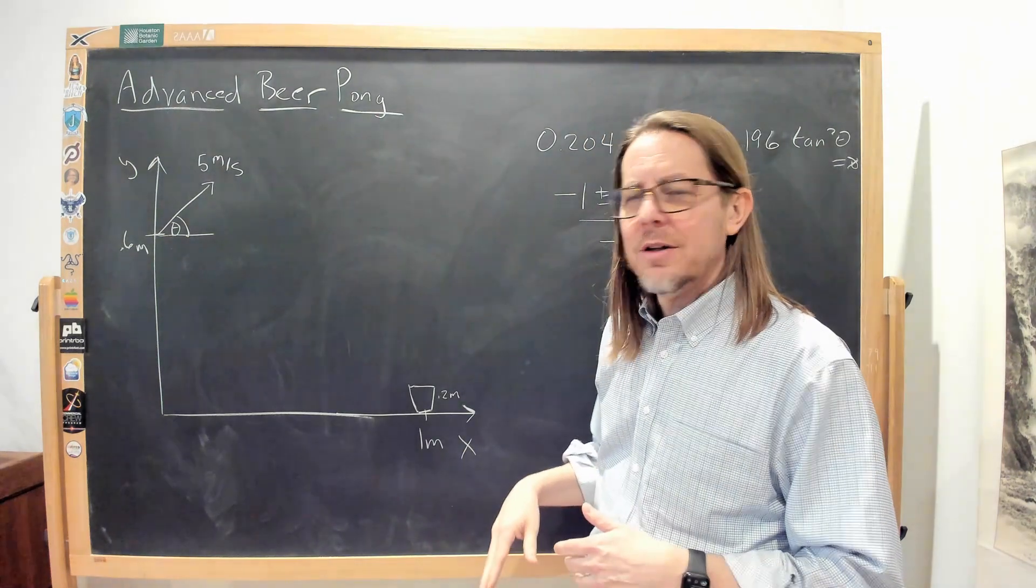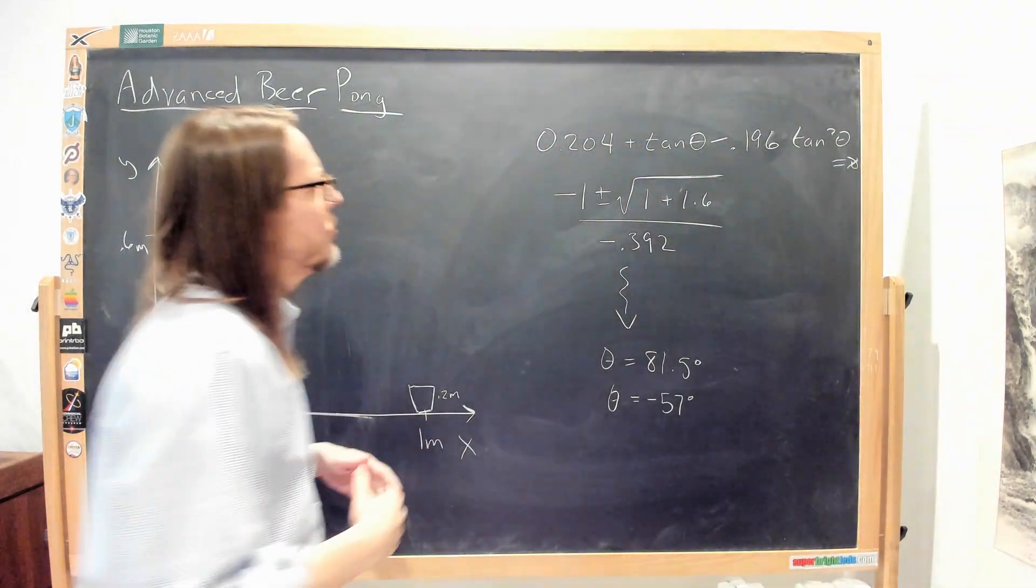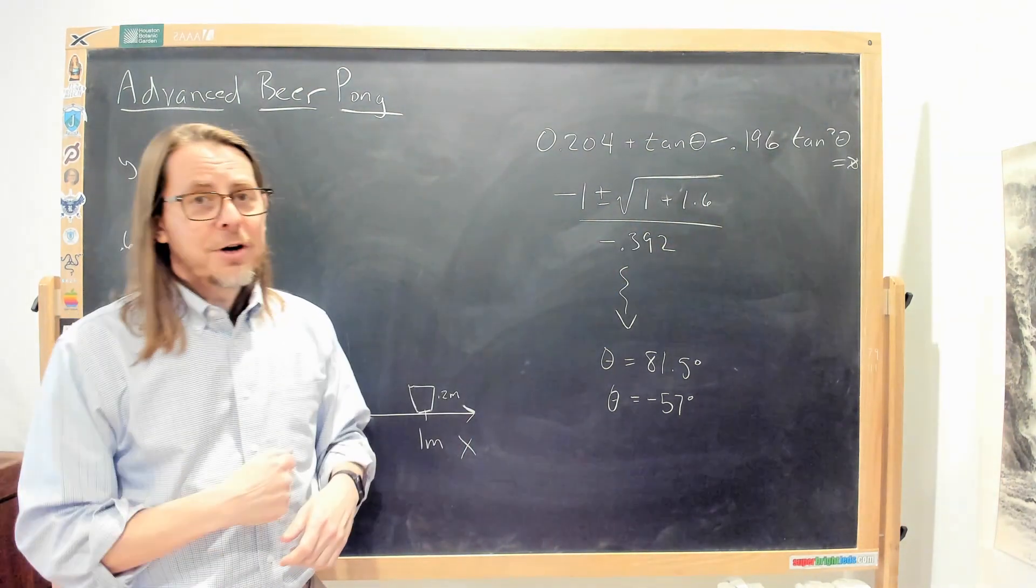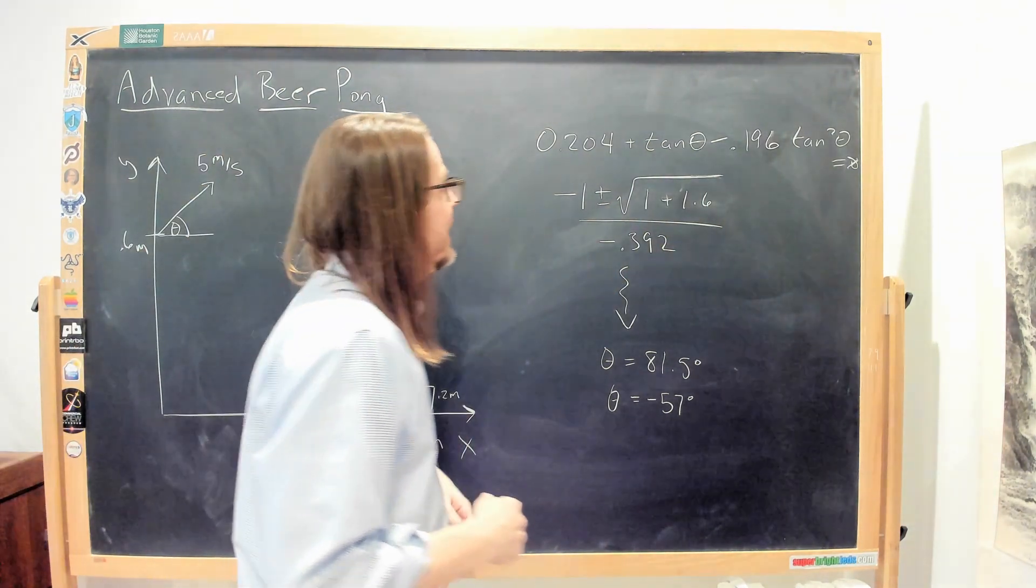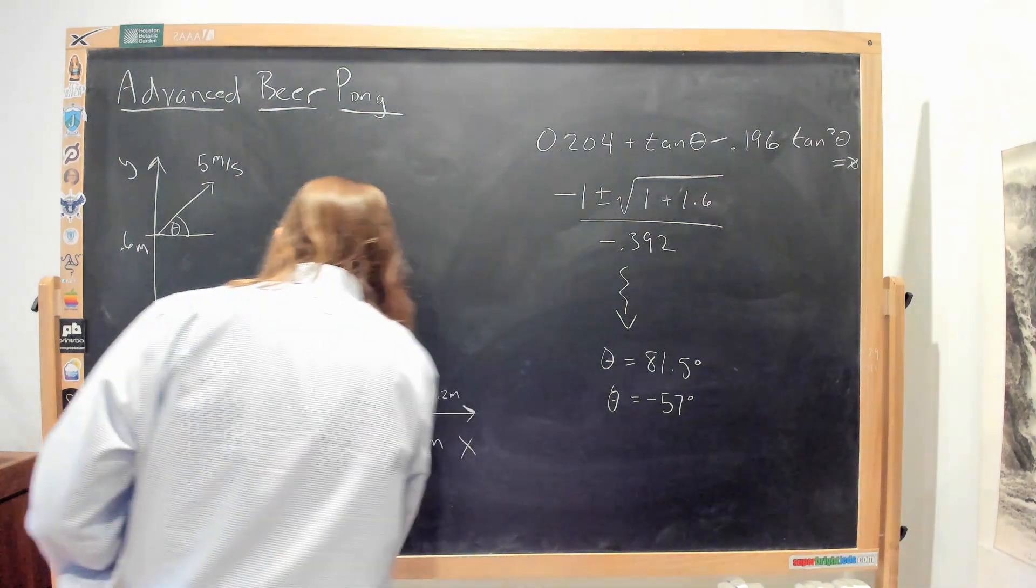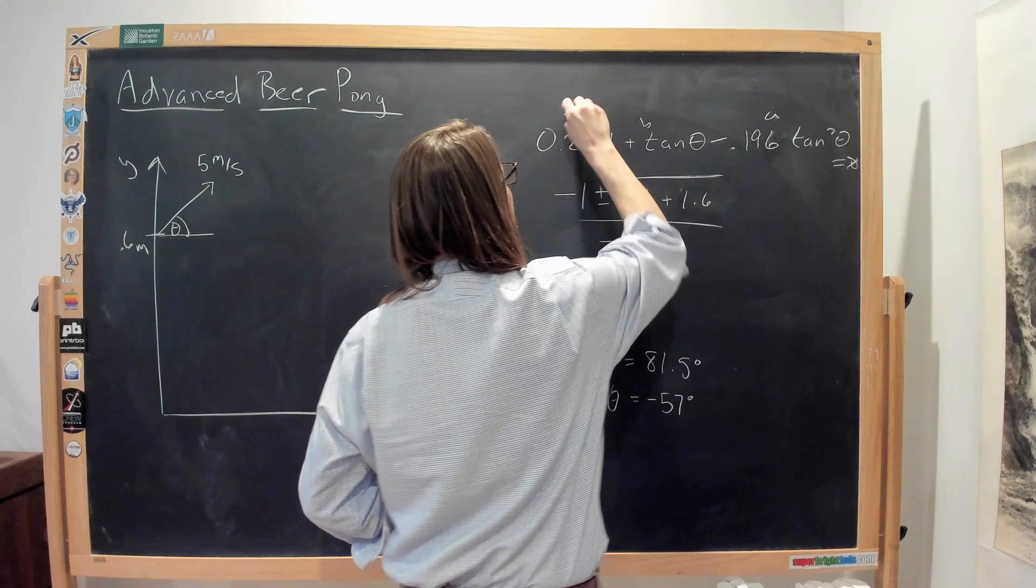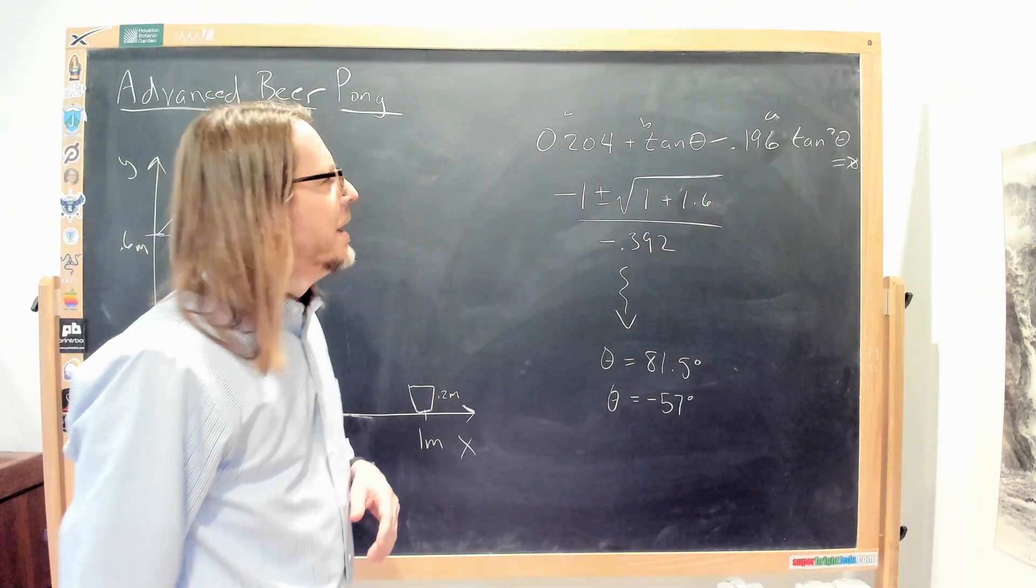The physics is all basically right, but in the end we wrote it in terms of a quadratic expression in tangent theta, and I went and applied my little quadratic formula. One thing that's a little funny is that I wrote it backwards, so this is A, and this is B, and that's C. That's fine.